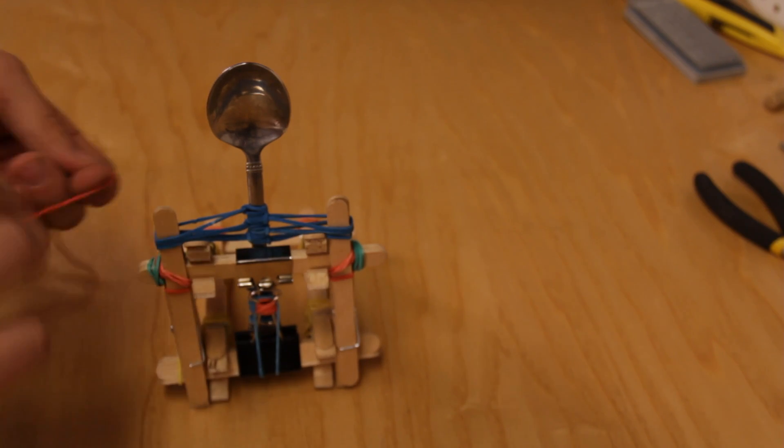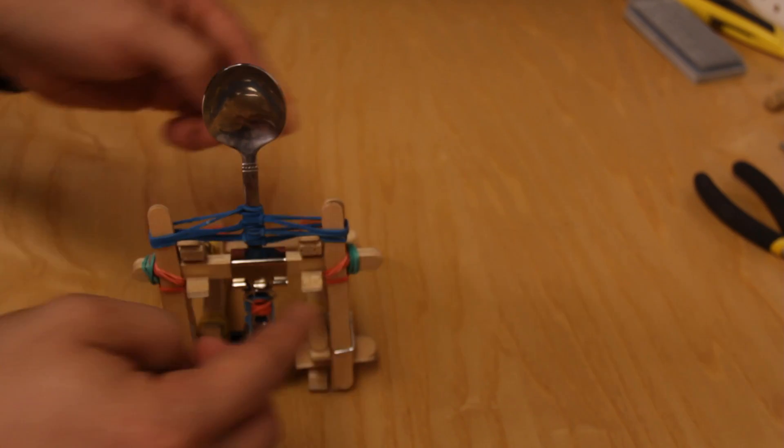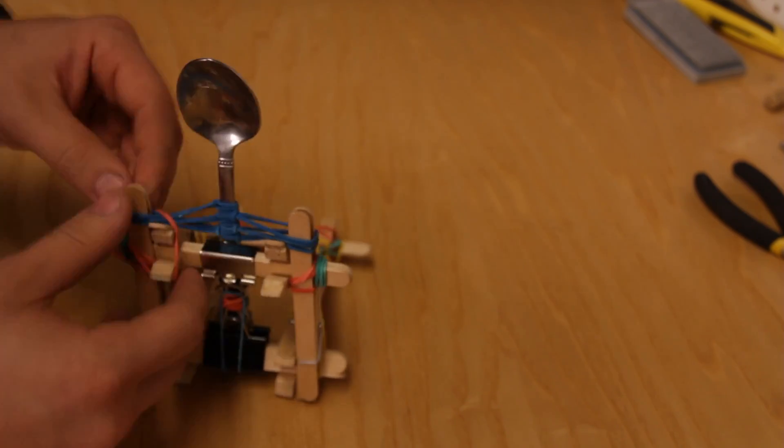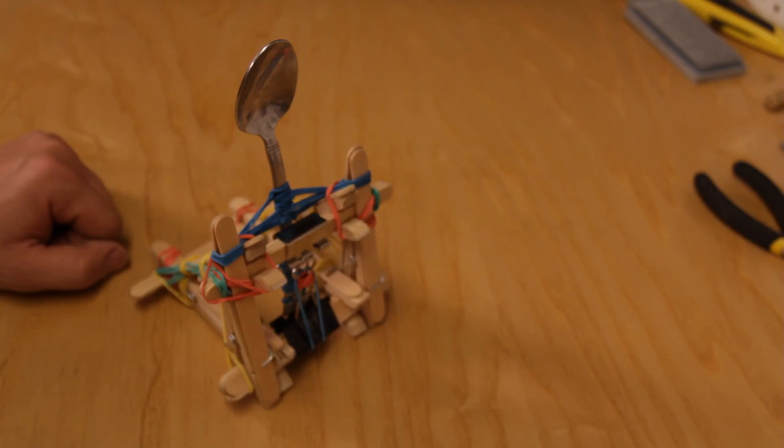Next, we're going to take some rubber bands and strengthen these corners. As you guys can see, I've over-engineered this mini catapult. There is no way you have to use all these rubber bands. I'm just making sure. Feel free to use as many as you want.